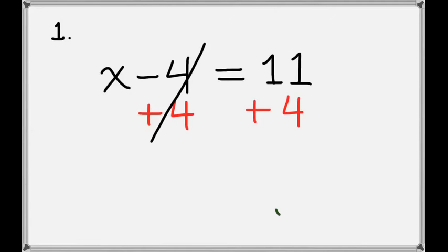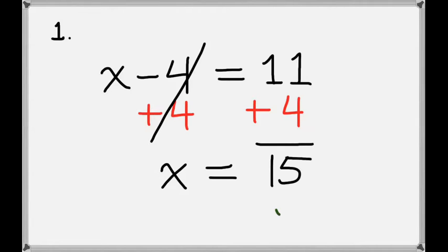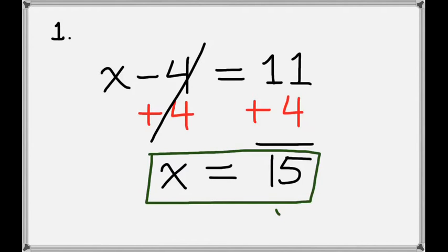On the left hand side the minus 4 and the 4 will cancel, so we're just left with x. And on the right hand side we'll add 11 plus 4 to get 15. So x equals 15 is our final answer.